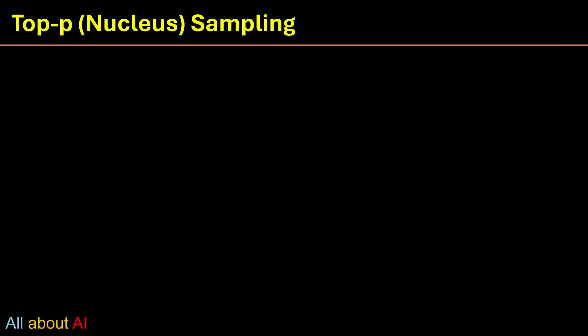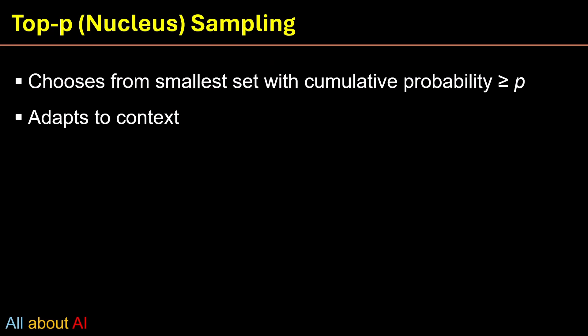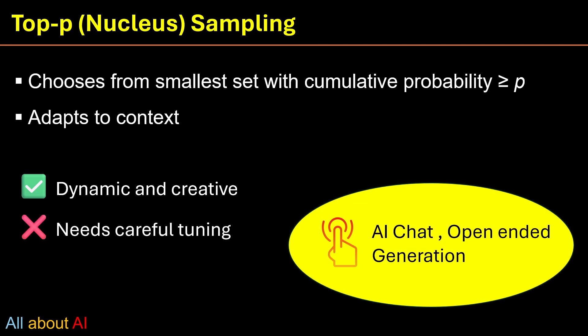Next we have top P sampling. It's also called nucleus sampling. This is a smart twist on top K. Instead of a fixed number, we pick from top probability mass, say the smallest group that together have 80% chance. This makes the model more flexible, especially in complex or creative conversation. But it requires careful tuning. It adapts to the moment. That's why it's useful for AI chat, open-ended generation.